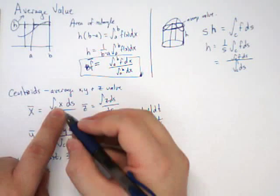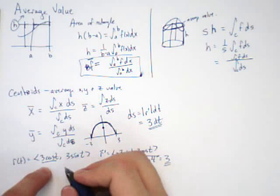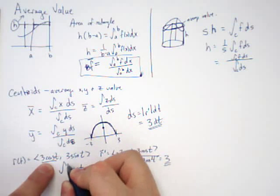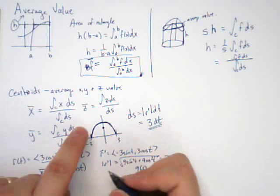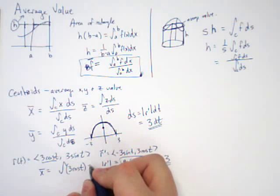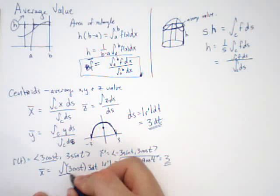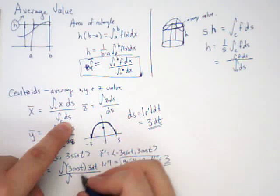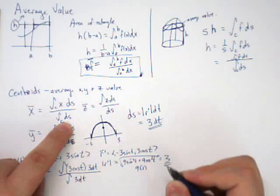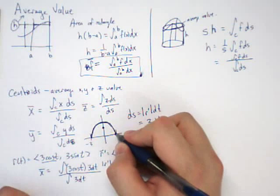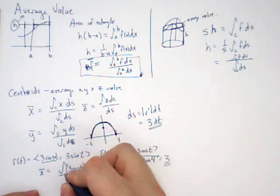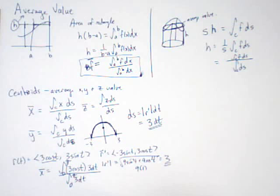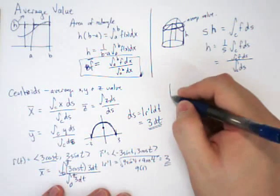So if I want X bar, well, I need the X value. Here's our X value. So I'm going to integrate 3 cosine t. That's my X. I need to make sure I put a dS in, which is 3 dt. And then I divide by the integral. The dS is a 3 dt. And now I need my bounds. If I want to only go halfway around this semicircle, then those bounds would be from 0 to pi.